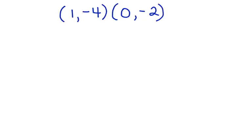Let's look at another one. What's the equation of the line that passes through the two points 1, -4 and 0, -2? Let's start by finding the slope. Here's our formula.